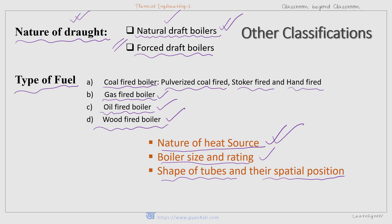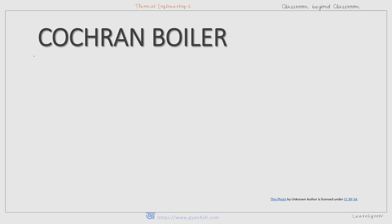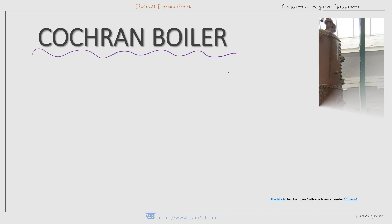This covers the classification of boilers based on different criteria. In the next class, we will discuss the Cochrane boiler, which is a vertical, multi-tubular, fire tube, coal fired boiler — and we will also discuss it from a classification point of view. Thank you for watching.